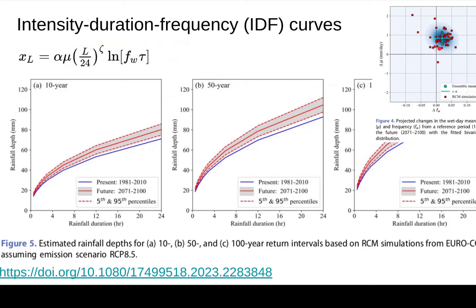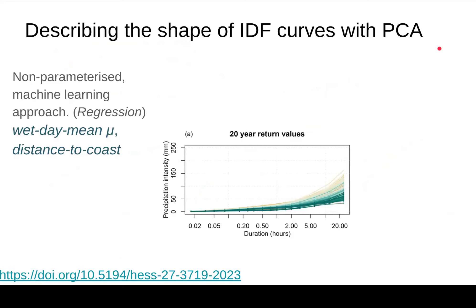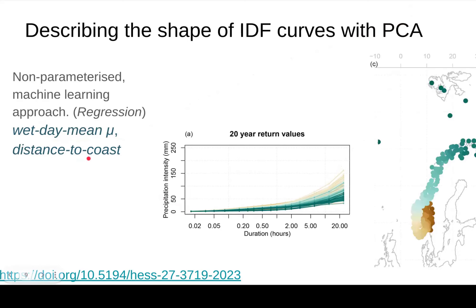Another way of predicting the shape of the IDF curves is through principal component analysis (PCA). This is a non-parametric approach, more like machine learning. Using regression, we found that the leading PCA component is a function of wet day mean precipitation and distance to the coast. You can see curves for various parts of the country, and the colors of the curves match the colors in the map.